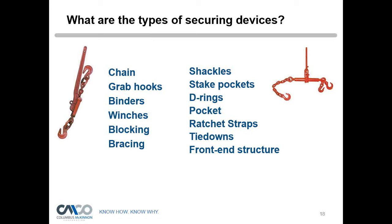D-rings are usually attached to trailers — bolted or welded, with most being welded. Stake pockets are usually outside the rub rails, while D-rings may be inside. Ratchet straps and chain tie-downs are also commonly used. The bulkhead or headboard of the trailer — you can push the load up against it, which will restrain the load from moving forward in many cases.